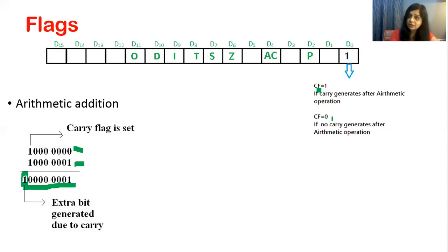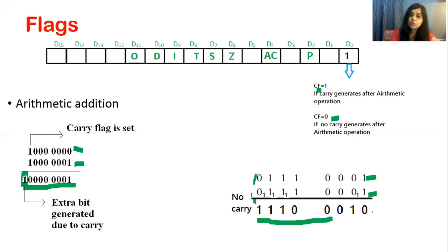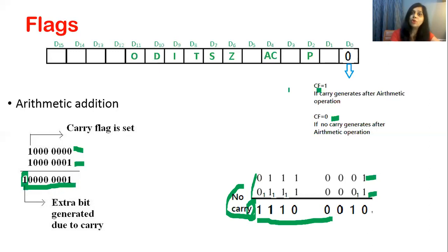Carry flag is 0 if no carry generates after arithmetic addition. For example, adding two 8-bit numbers gives a result that is also an 8-bit number — no carry is generated from the most significant bit. When no carry generates, the carry flag will reset to 0. In summary: if carry generates from the most significant bit, carry flag is set to 1; if no carry generates, carry flag resets to 0.